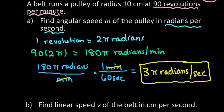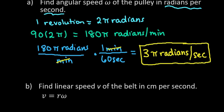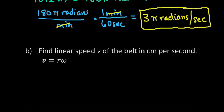All right, so for our next part, what we are going to do is we want to find the linear speed v of the belt in centimeters per second. So remember that the velocity or the linear speed is equal to our radius times omega.